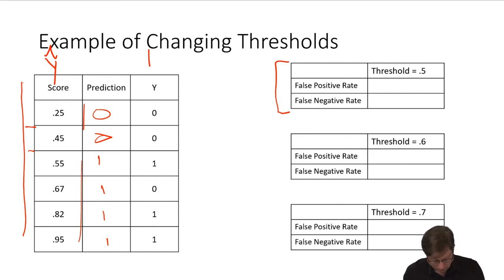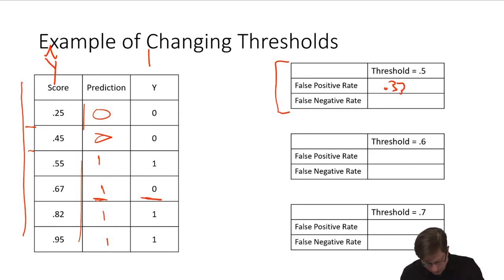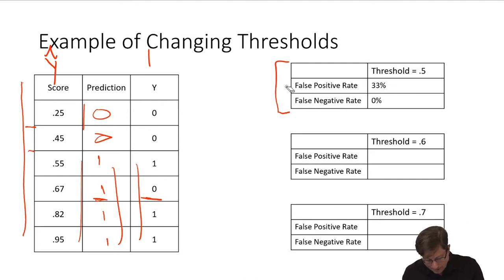Looking at the false positive rate: there is one zero that was incorrectly classified as 1, so that's a false positive rate of 0.33. The false negative rate is 0 because all the true ones are classified as 1. Let's click a button and see if that's right. Now take a minute and think this through and try the different thresholds.